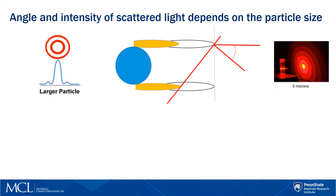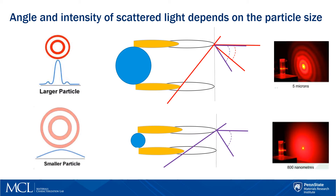We can do this because the angle and intensity of light depends on particle size. Larger particles scatter at more narrow angles but scatter light much more intensely. Smaller particles scatter over a wider range of angles but less intensely. So there is a fundamental relationship: the size of the particle is related to the angle of scattered light and also the intensity.